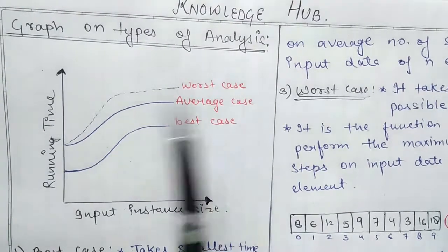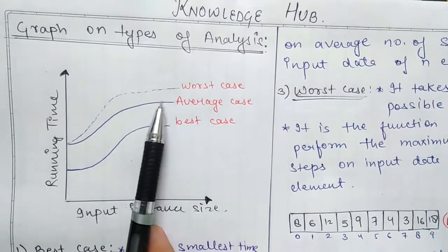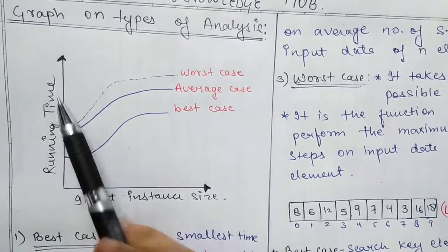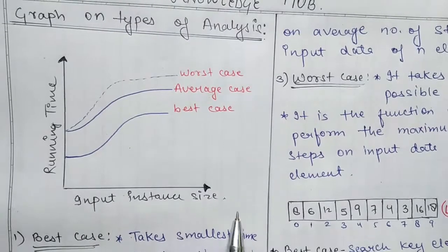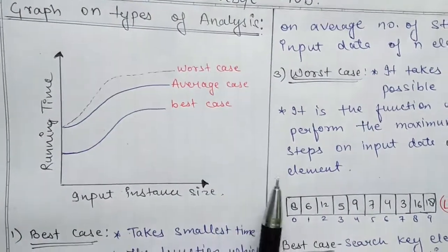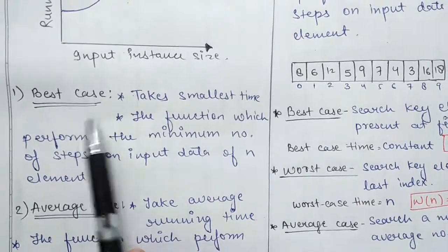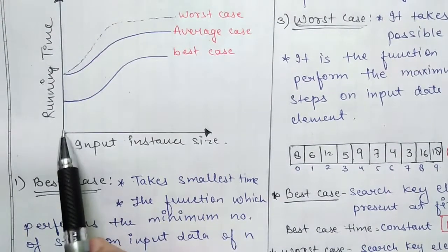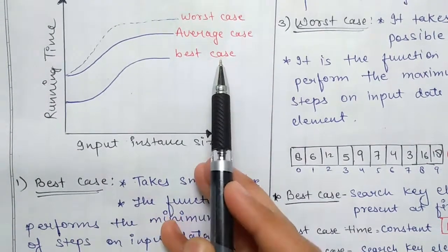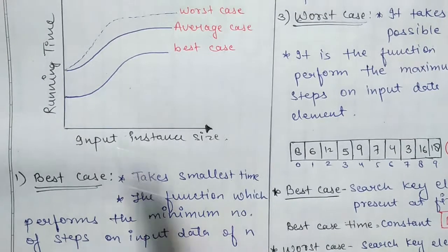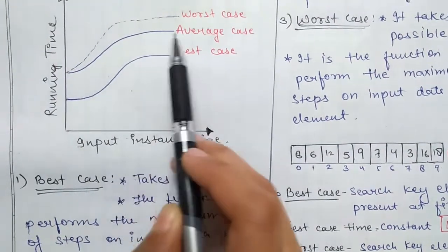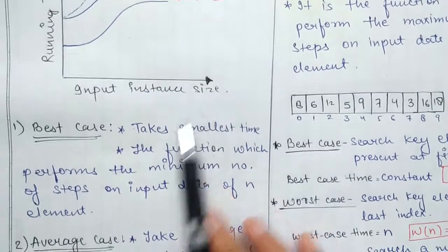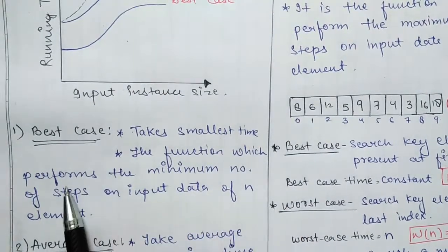I will explain using a graph in a 2D coordinate system. The Y-axis is running time and the X-axis is input size. So we have best case, average case, and worst case. Best case takes the smallest time — you can see it starts from below on the graph. Average case takes average time, whereas worst case takes the maximum amount of time.